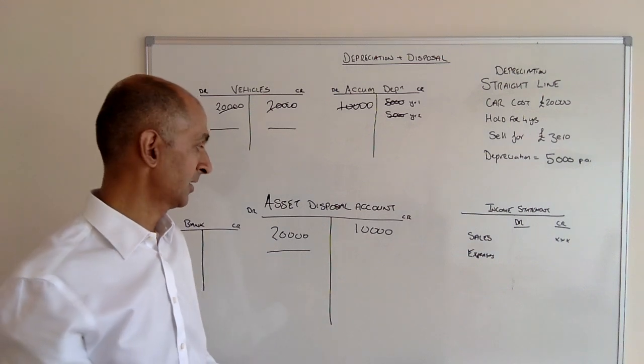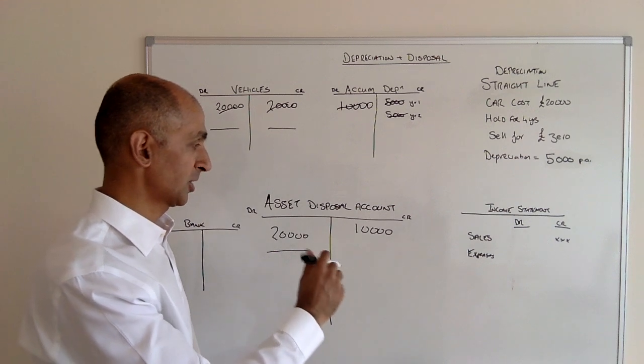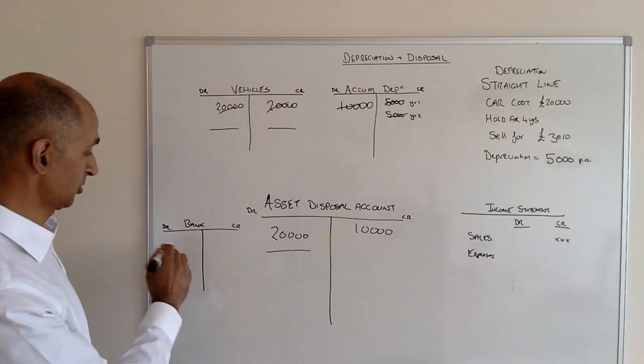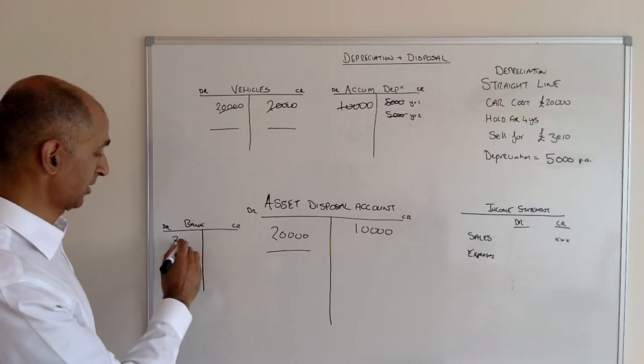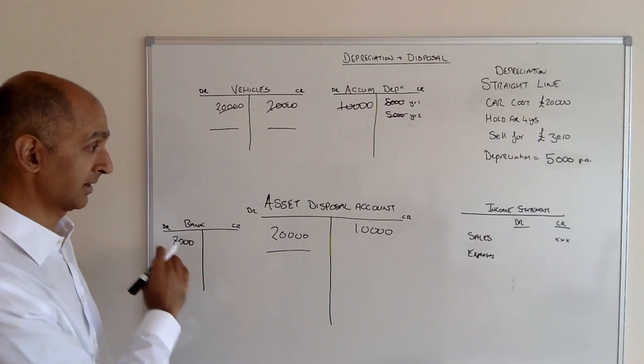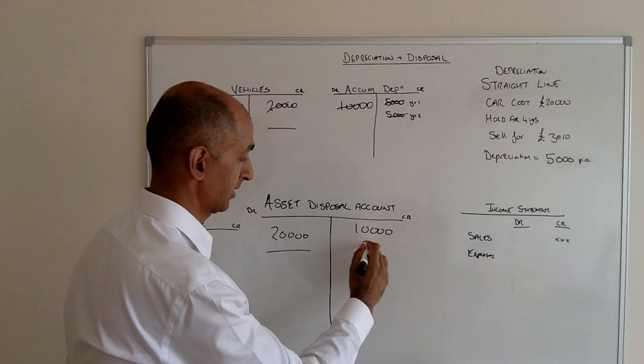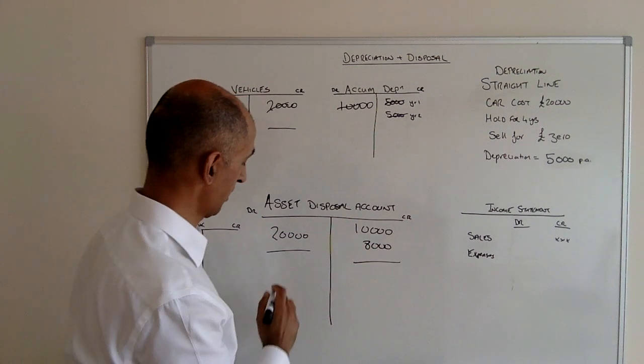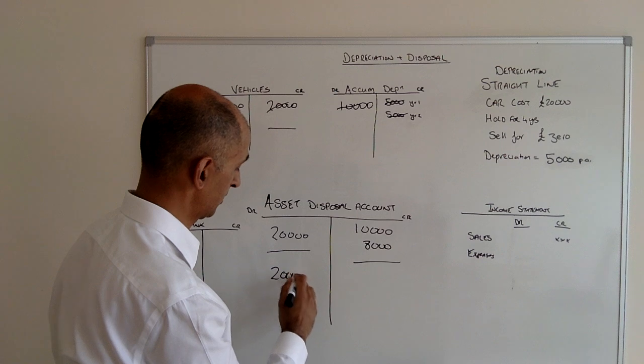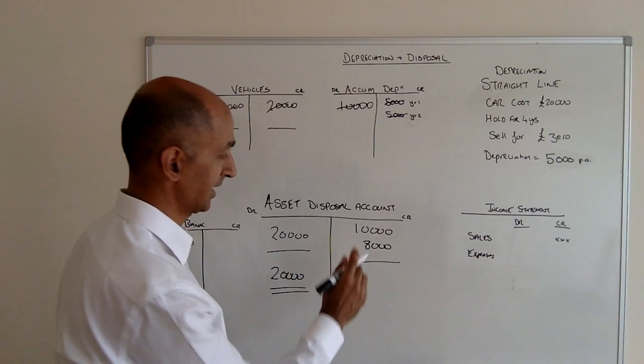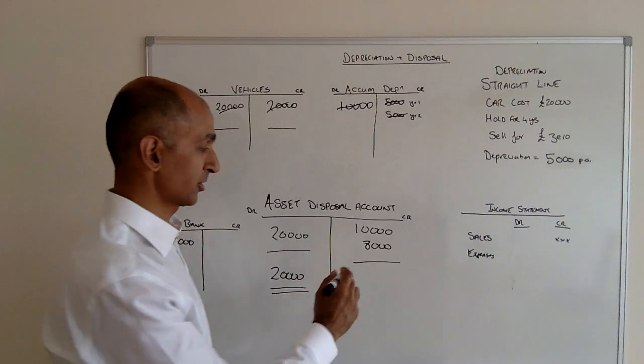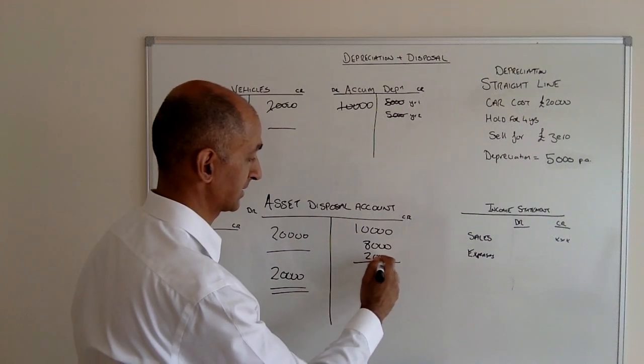Somebody's given us £8,000. Here's a little bank ledger account. We debit bank £8,000—money going into the bank—and we credit here £8,000. Now we have £20,000 of a balance on this side and only £18,000 on this side, so we have to put another £2,000 here to balance that off.